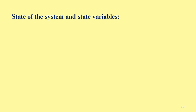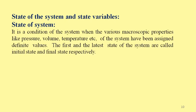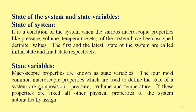State of the system: it is a condition of the system when the various macroscopic properties like pressure, volume, temperature, etc. have been assigned definite values. The first and last states are called the initial state and final state respectively. State variables: macroscopic properties are known as state variables. The most common ones — composition, pressure, volume, and temperature — when fixed, cause all other physical properties of the system to be automatically assigned.